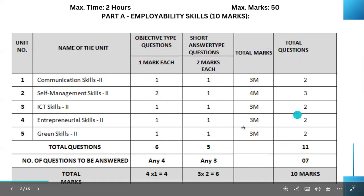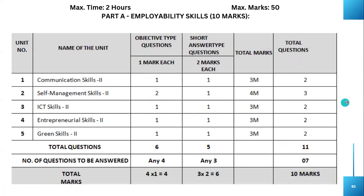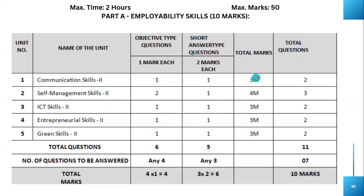Now we will see the chapter-wise marks aggregation, so it will be easy for you to prepare for your exams. The first chapter is Communication Skills. Here objective type questions are 1-mark questions — you will get 1 from this — and 2-marks questions, 1. Total marks are 3 and total questions are 2.